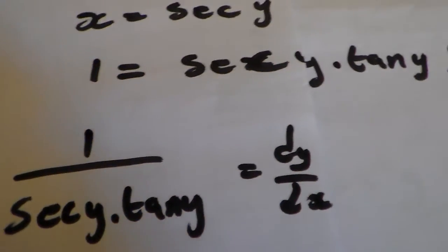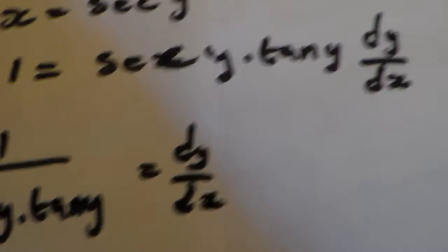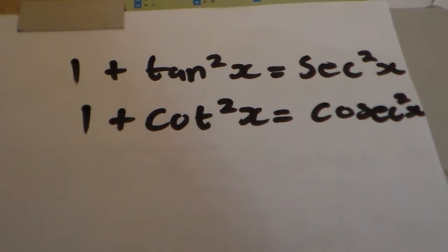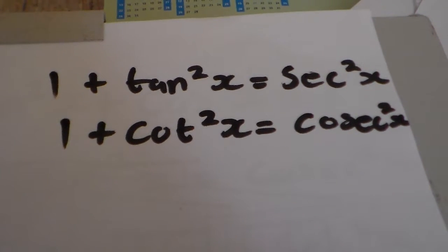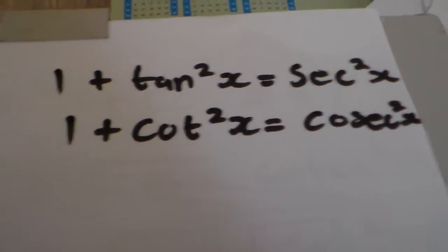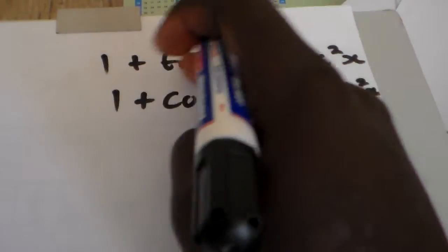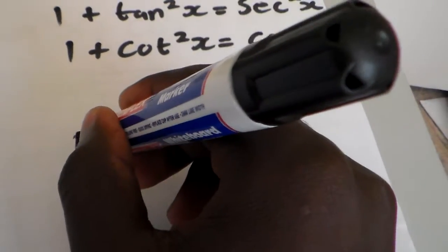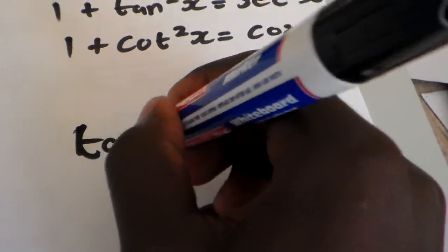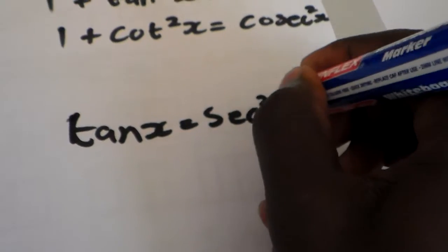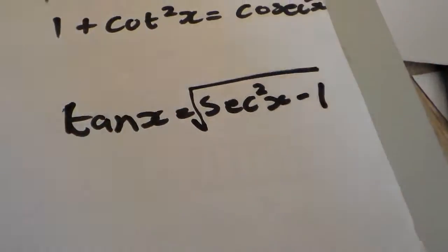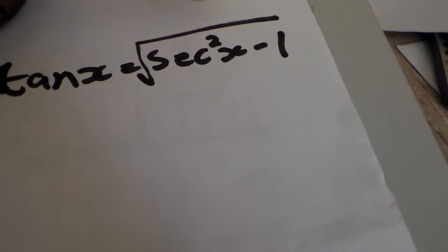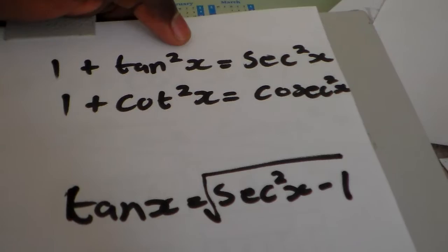Now we look at our identities. Using the identity for tan squared: we make tan squared x the subject of the formula, so tan x equals sec squared x minus 1. Therefore, tan x equals the square root of sec squared x minus 1. We derive this from that identity.